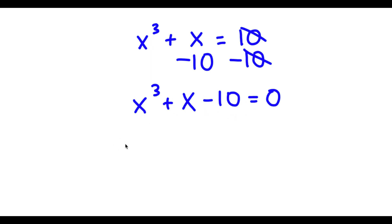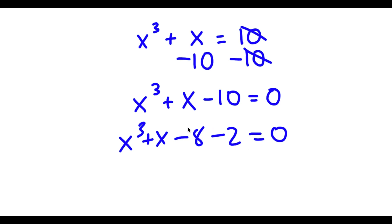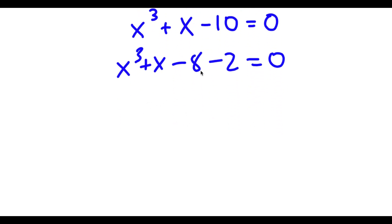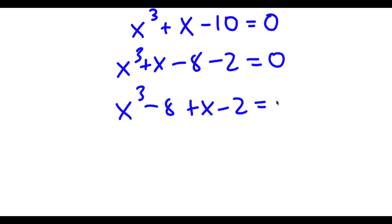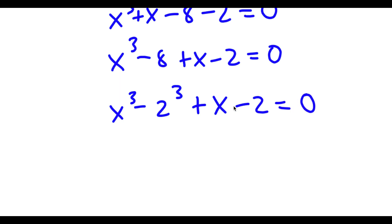Now negative 10 is the same thing as negative 8 minus 2. So now I'm going to switch the order of these and rewrite this as x to the power of 3 minus 8 plus x minus 2 is equal to 0. Now 8 is the same thing as 2 to the power of 3, so now I have x to the power of 3 minus 2 to the power of 3 plus x minus 2 is equal to 0.